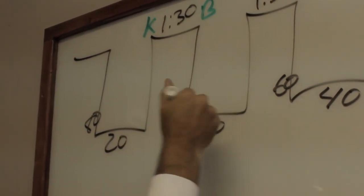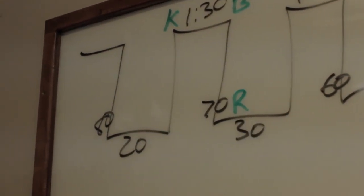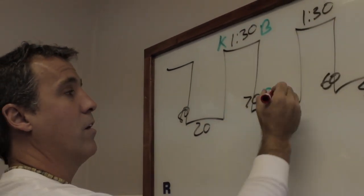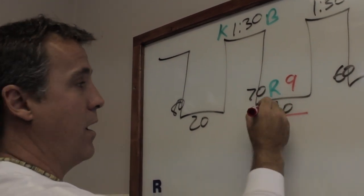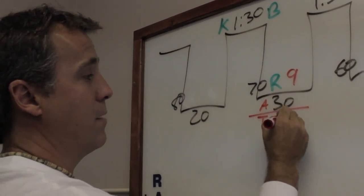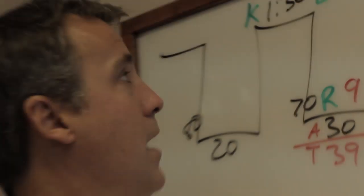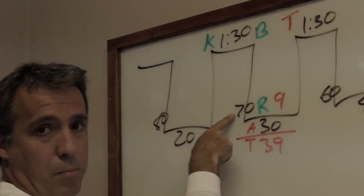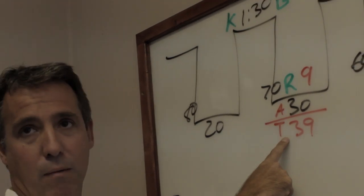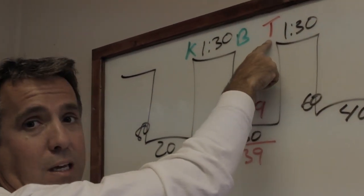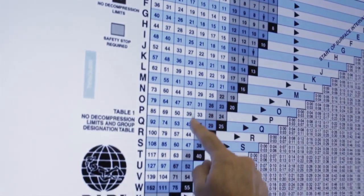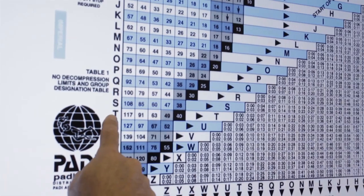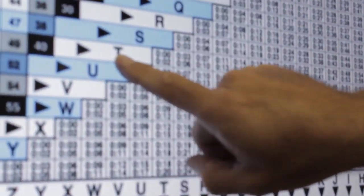As a B, I'm gonna go to 70 feet. As a B at 70 feet, I have residual nitrogen. A B has residual nitrogen at 70 feet of nine minutes. His actual dive time is 30 minutes, so his total bottom time is 39 minutes. The diver made a dive to 70 feet deep for a total bottom time of 39 minutes, giving him a pressure group of T — 70 feet, 39 minutes, pressure group T.